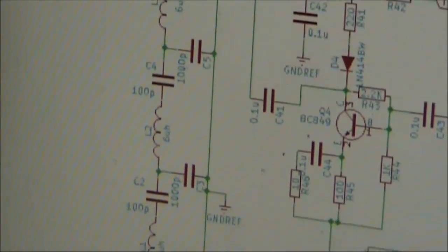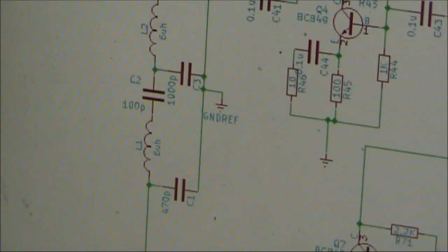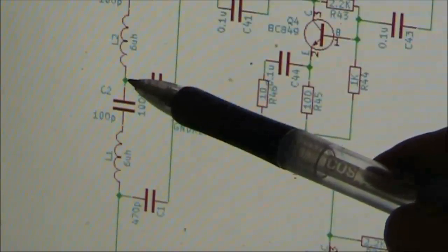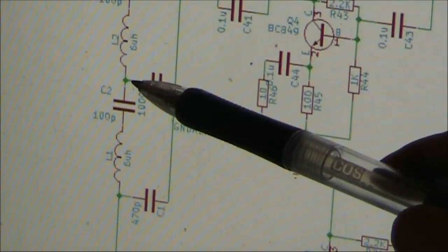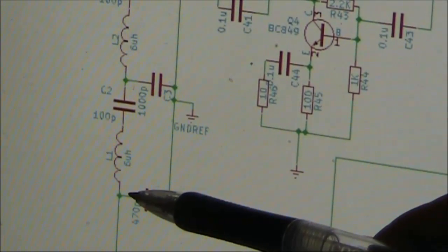Trying other points produced a reasonably strong signal until we got to the bottom end of L1. When the screwdriver was in this point, the signal still seemed to be quite strong. But when I put it on here, it was much weaker.